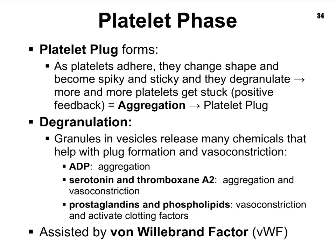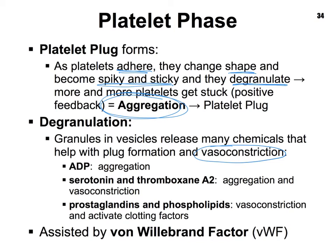In the platelet plug phase, because of the stickiness created by the exposed collagen fibers, our platelets begin to adhere — they begin to stick to the blood vessel wall — and that causes them to change shape, become rather spiky and even more sticky, and then release their chemicals, which we call degranulation. Some of these chemicals promote even more stickiness, causing more platelets to get stuck and aggregate, forming a plug. Some of those chemicals also promote vasoconstriction, so the chemicals are promoting more plug formation as well as vasoconstriction.